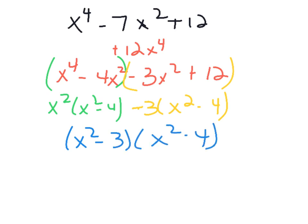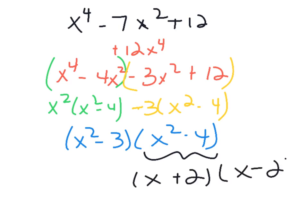x²−4 factors further as a difference of perfect squares: (x+2)(x−2). x²−3 cannot be factored. Final answer: (x²−3)(x+2)(x−2). We'll practice more in class tomorrow.